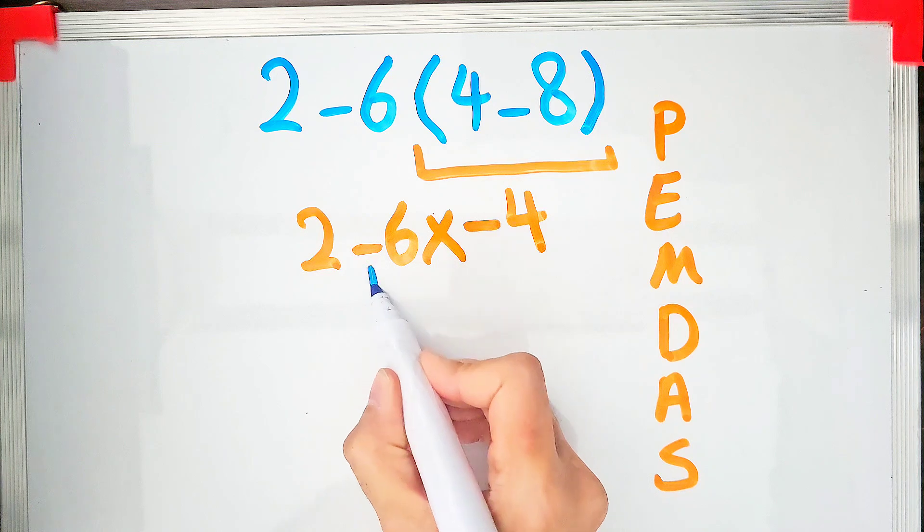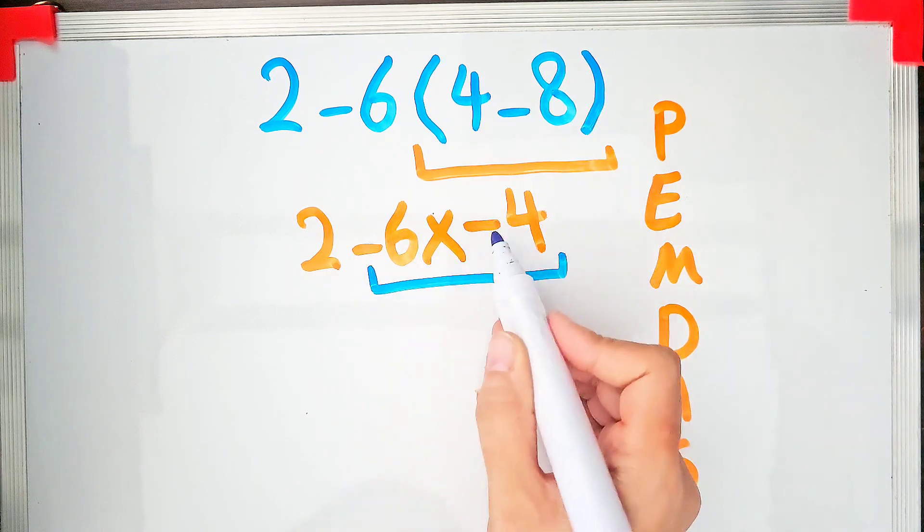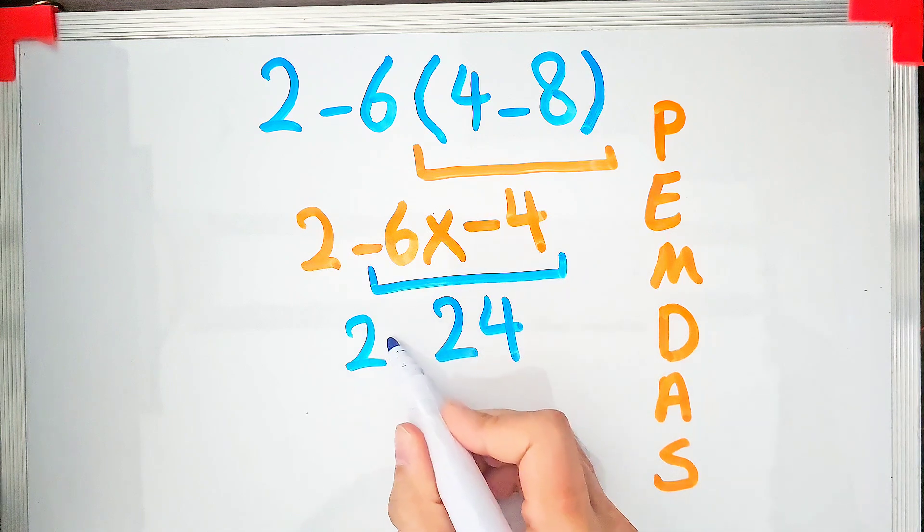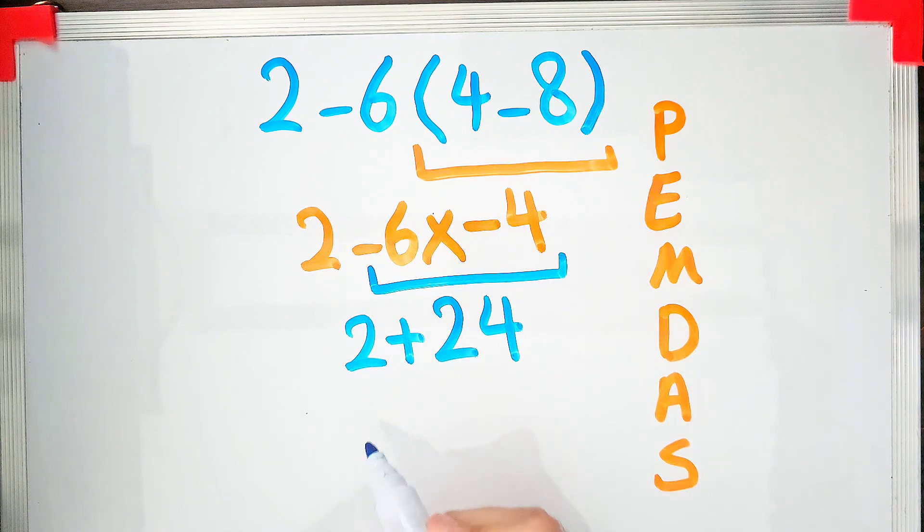First, we do multiplication because multiplication has the higher priority. Negative 6 times negative 4 equals 24. 2 plus 24 equals 26. And we find the answer of this question.